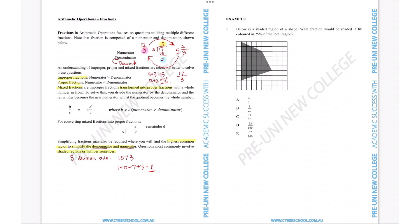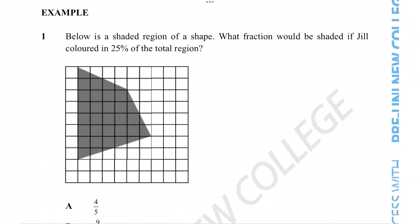So that's enough of an introduction. Let's try out what we just learned in this example question. Here we have a shaded region of a shape. The question is, what fraction would be shaded if Jill colored in 25% of the total region? Since we have a shape that's already been partially shaded in and we're shading in another 25%, we need to know how much has been shaded already before we even consider adding in another 25% of this total shape. So let's start off by looking at the shape and realizing that there's some parts that aren't fully shaded and some squares that are fully shaded. And those are much easier to count. So let's start off by counting the fully shaded squares.